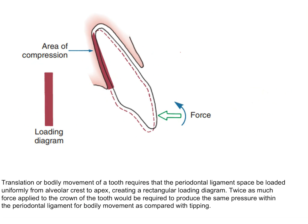When bodily movement takes place, the entire tooth is being moved. Here the force being applied is not a single force; some amount of torquing is also being given. So there are two types of forces applied on the tooth to bring about translation. In orthodontics, it is not possible to pass the force through the center of resistance, so torquing movement is incorporated within the wire so that the moment of force increases and translation occurs. Since the entire tooth moves uniformly, there is uniform loading taking place in the PDL area.